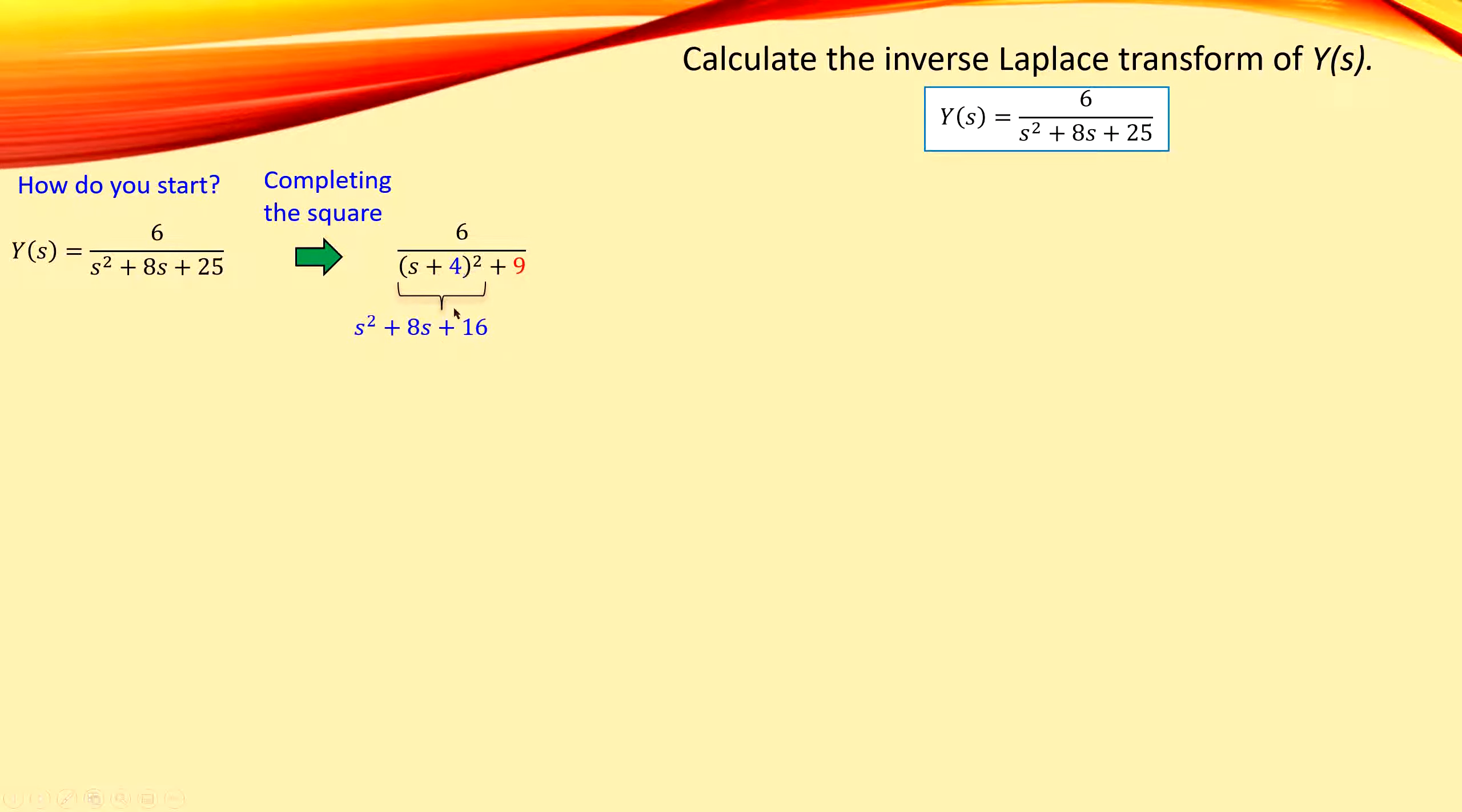So this in total will result in that expression. But since we have a 25 as a constant here, I need an additional 9. So that means actually this plus the 9 is the exact original form in the denominator of our transfer function.